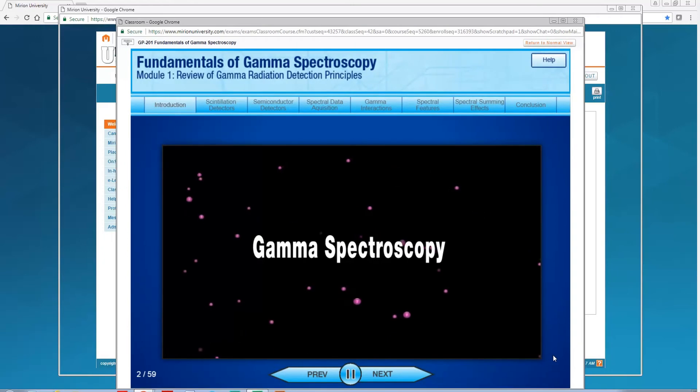Welcome to Mirian's Fundamentals of Gamma Spectroscopy training course. This course includes 11 individual training modules intended to describe the gamma spectroscopy measurement process in logical progression.